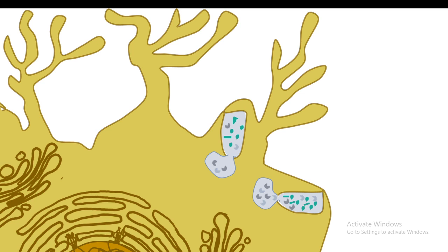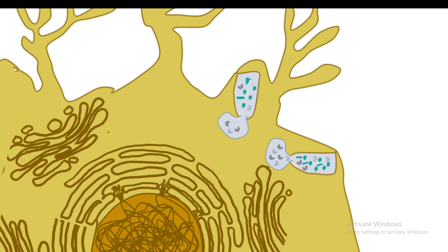Meanwhile, inside the nucleus of the dendritic cell, MHC genes are expressed. MHC genes are expressed in a cluster known as HLA cluster or human leukocyte antigen cluster. For simplicity, imagine there is an MHC gene encoding the MHC RNA.